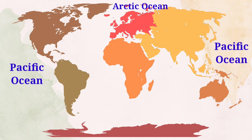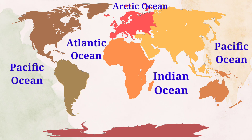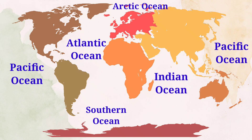Atlantic Ocean — the Atlantic Ocean is the world's second largest ocean. Indian Ocean — it is the third largest ocean in the world. Southern Ocean. So these are the five oceans: Arctic Ocean, Atlantic Ocean, Pacific Ocean, Indian Ocean, and Southern Ocean.